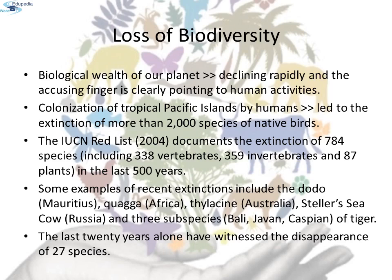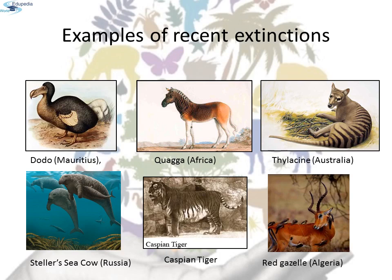The last 20 years alone have witnessed the disappearance of 27 species. Examples of recent extinctions shown here include: the dodo from Mauritius, quagga from Africa, thylacine in Australia, Steller's sea cow from Russia, the Caspian tiger, and the red gazelle from Algeria.